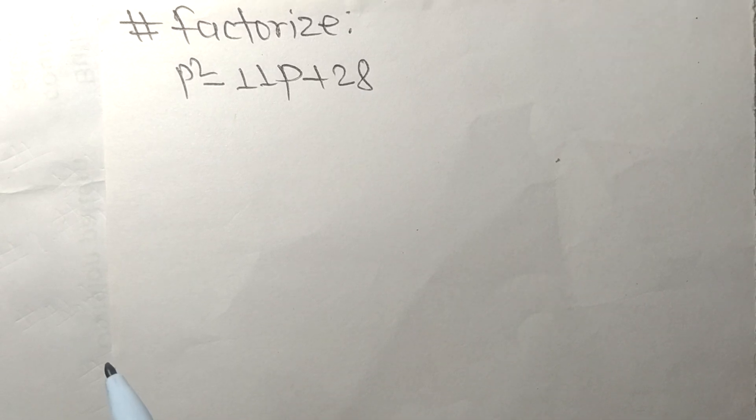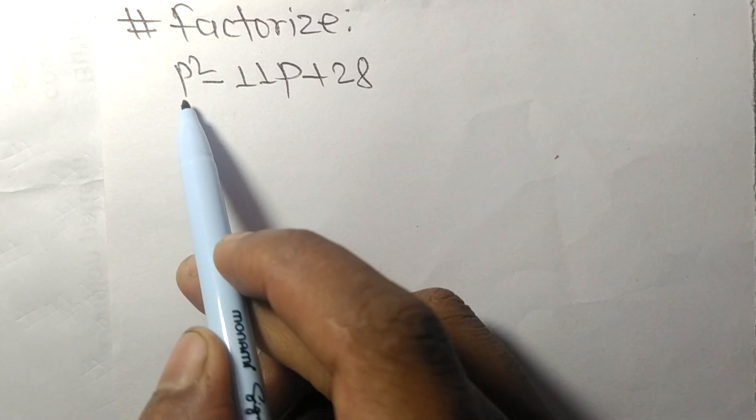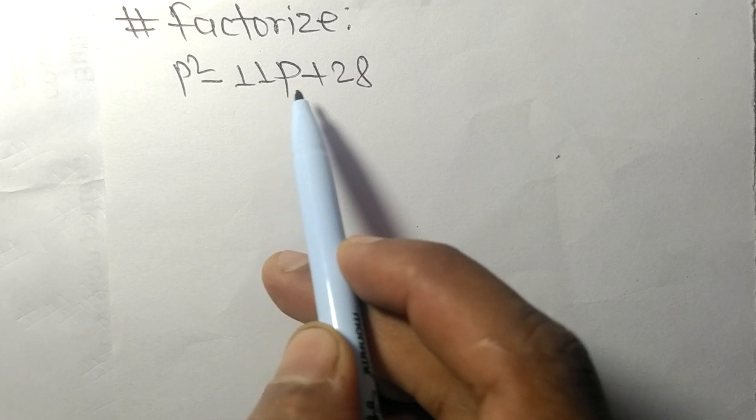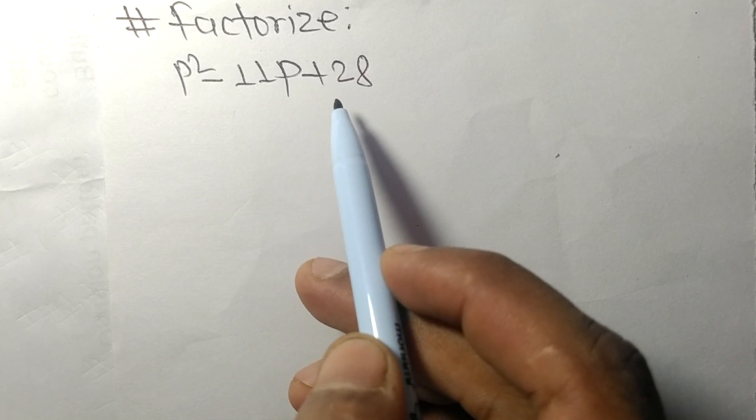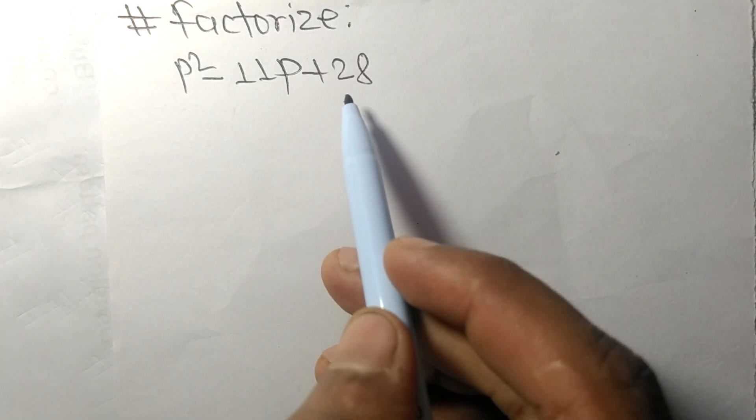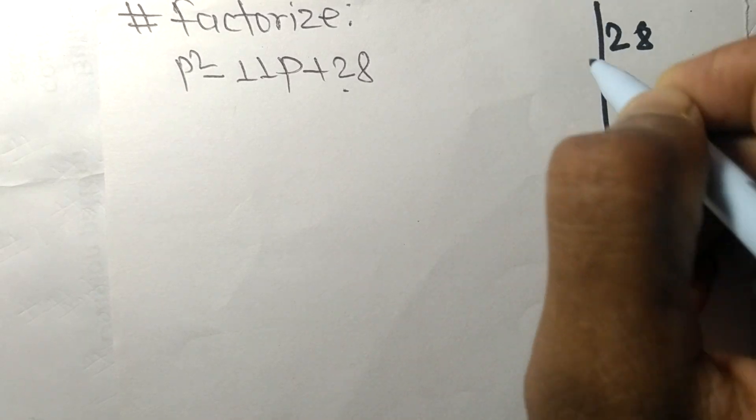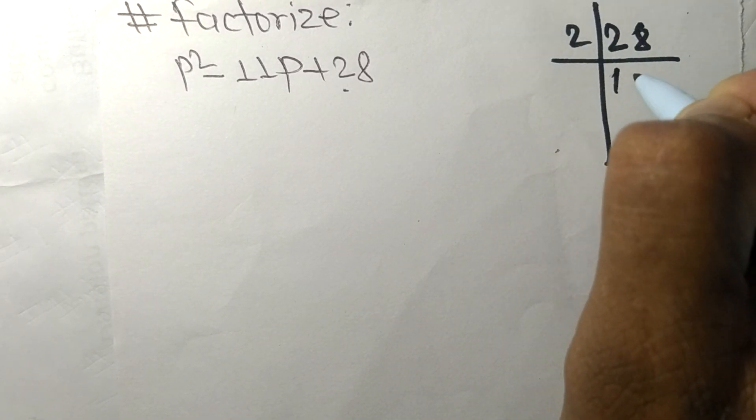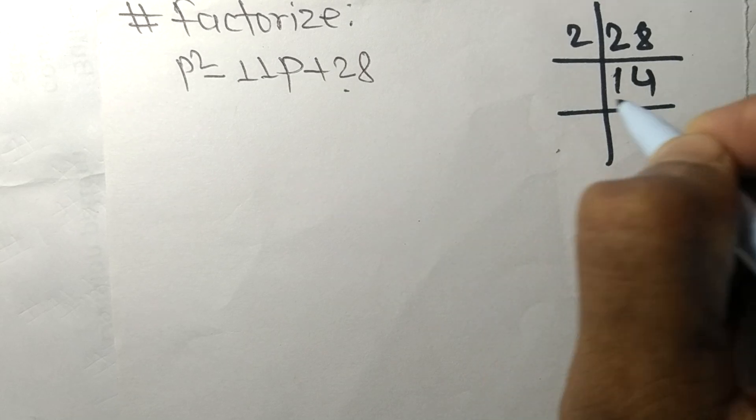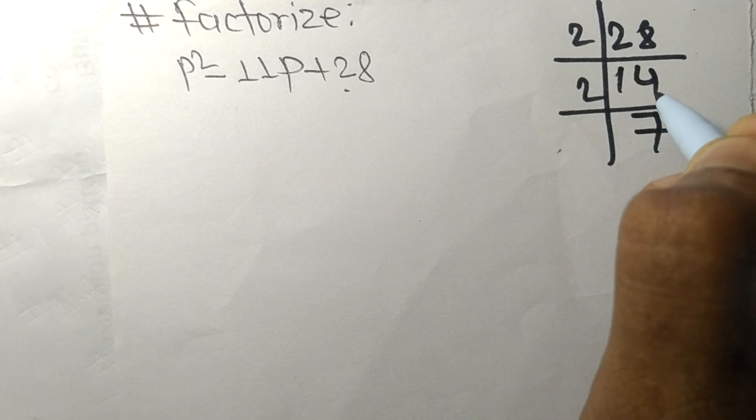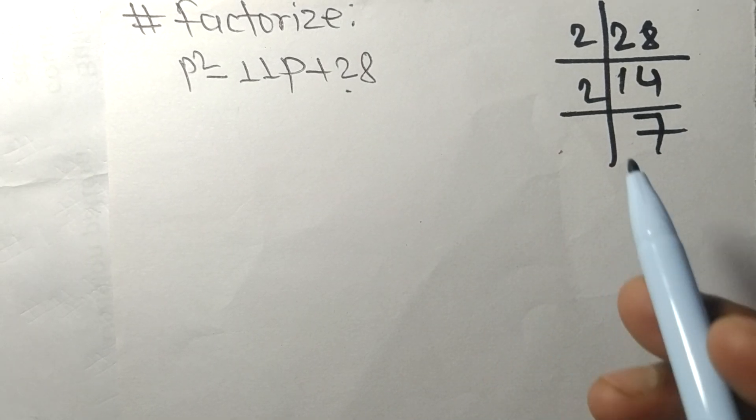Today in this video we shall factorize P² - 11P + 28. First we factorize the last number 28, so it is 2 times 14 equals 28, or 2 times 7 times 2. So now we got 2, 2, and 7.